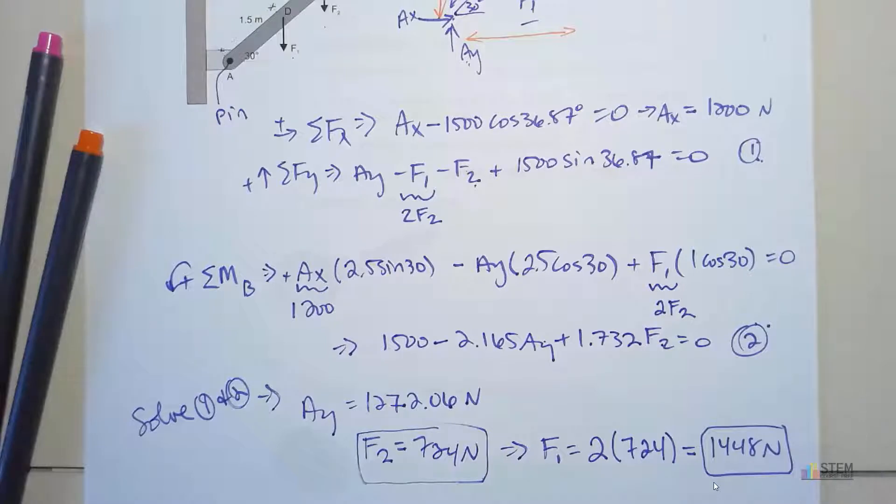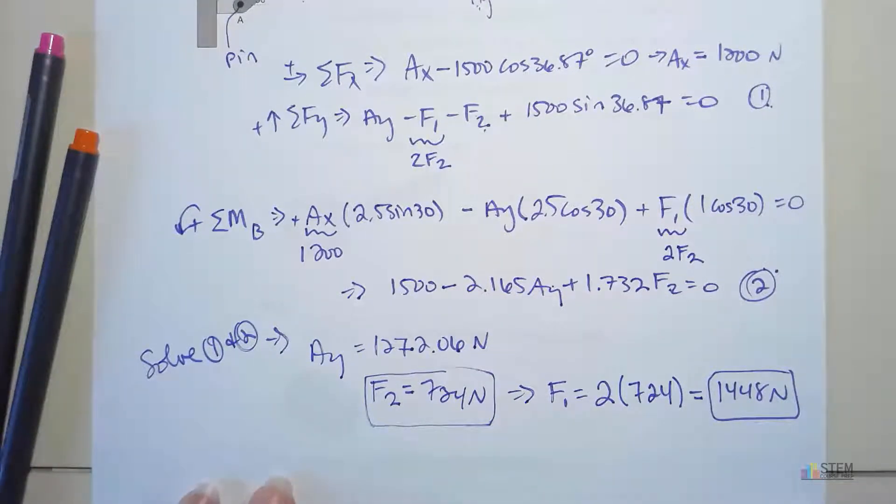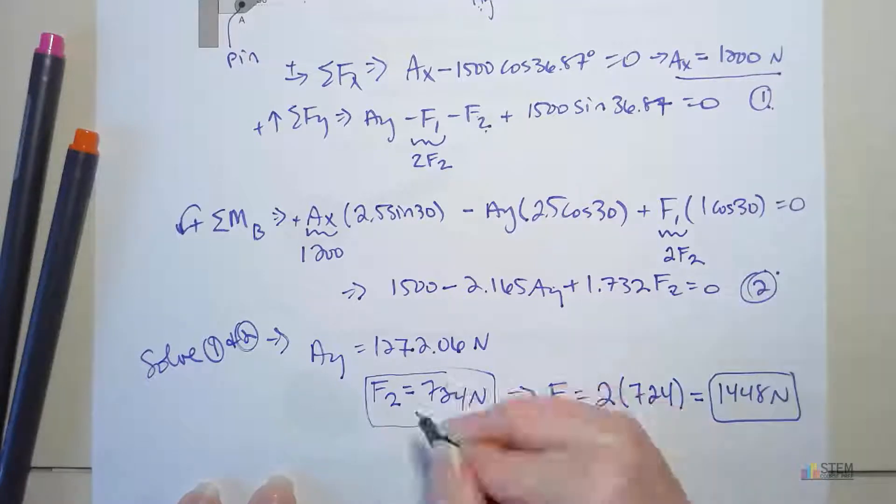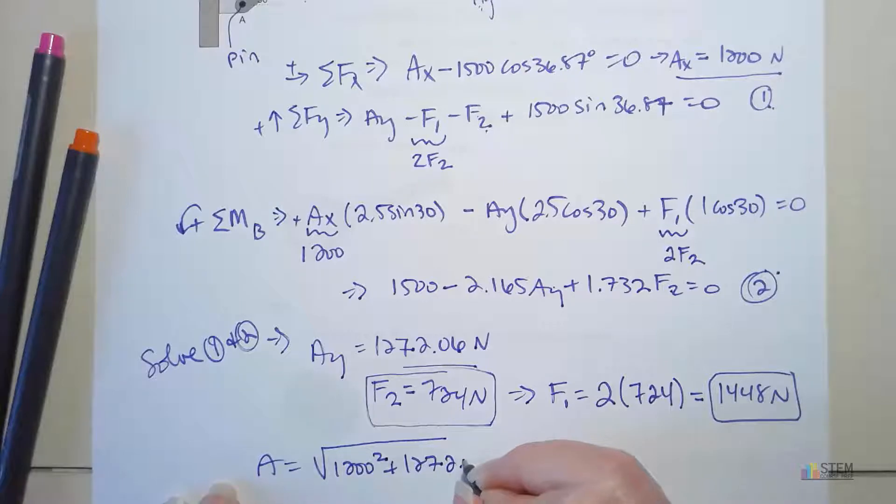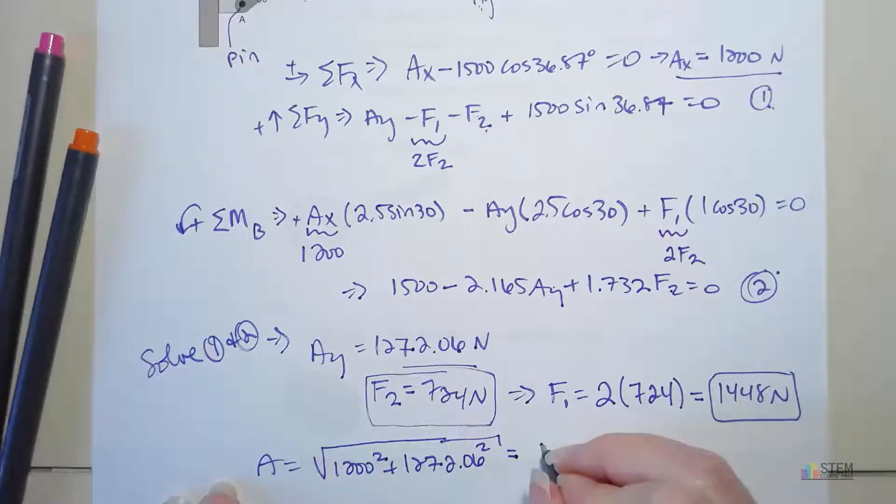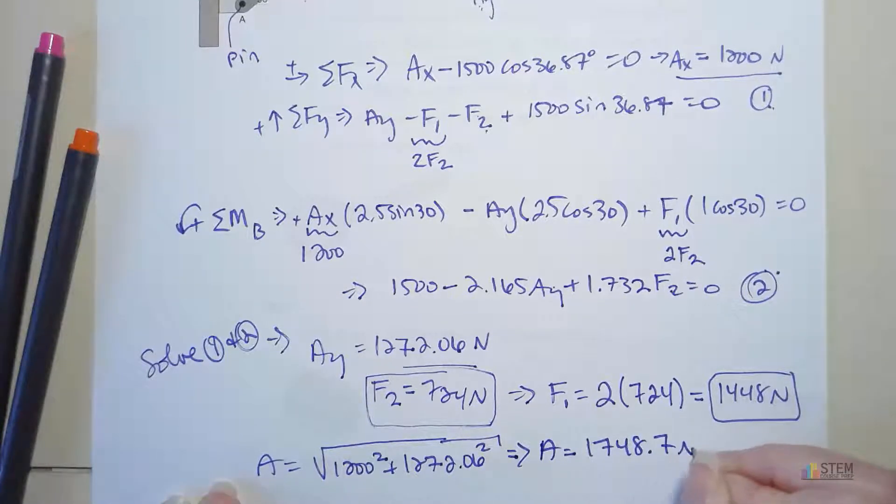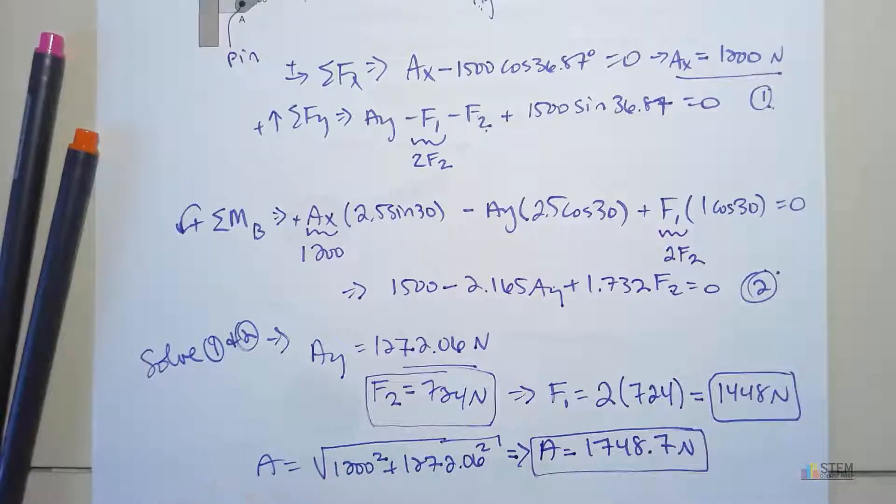We want the magnitude of the reaction at A. Our magnitude of the reaction at A - we need to find Ax and Ay, we have both of those. Here's Ax, here's Ay. So A then, you'll just find the magnitude. 1200 squared plus 1272.06 squared, do the square root. You'll get that A is 1748.7 newtons. So that's what you get there.